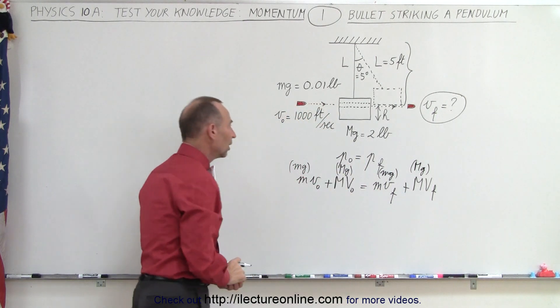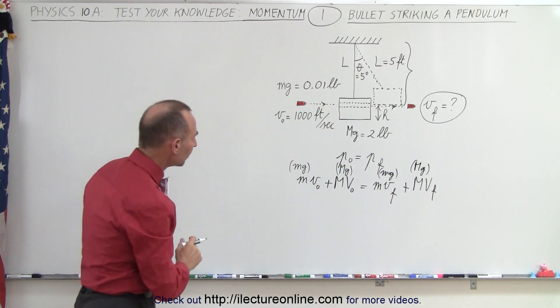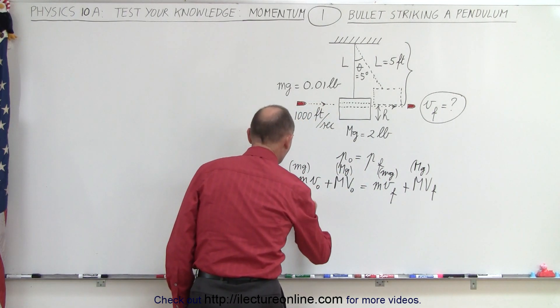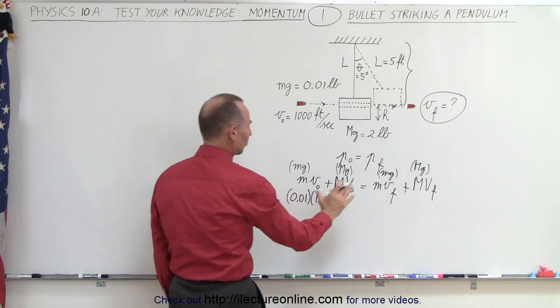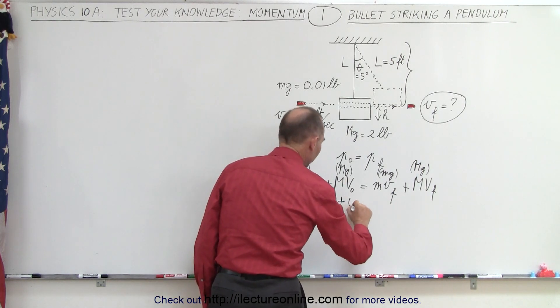We can say that 0.01 times v initial, which is 1000 feet per second, plus zero because the block is not initially moving,